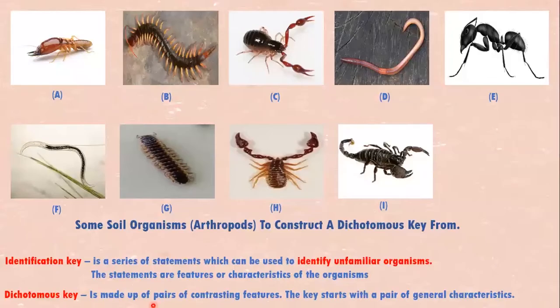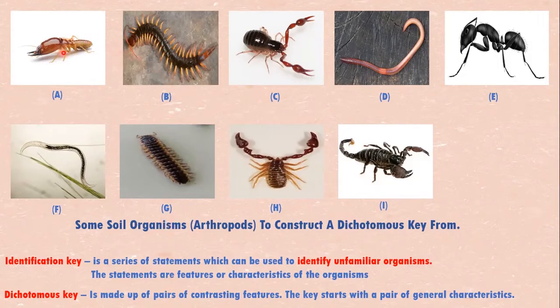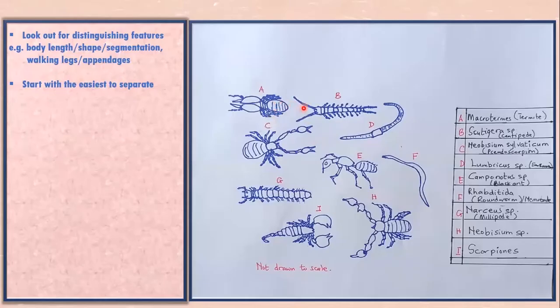And dichotomous keys, we look at only two, a pair of contrasting features. We look at the leg of this one and the leg of this one, only two features at a time. In this lesson, these organisms, I drew them on a page and wrote their names here.